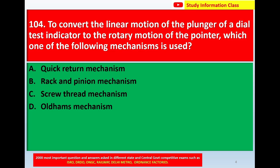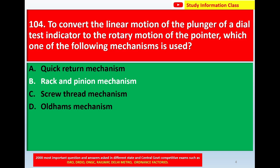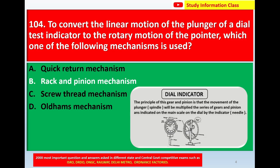Correct answer is rack and pinion mechanism. This is the dial indicator — the principle of the gear and pinion is that the movement of the plunger spindle will be multiplied through a series of gears and the pinion, as indicated on the main scale on the dial by the needle. So for question number 104, correct answer is option B — rack and pinion mechanism.